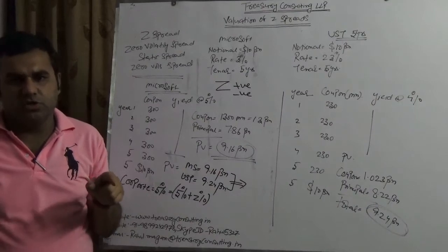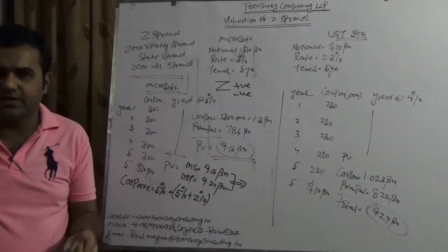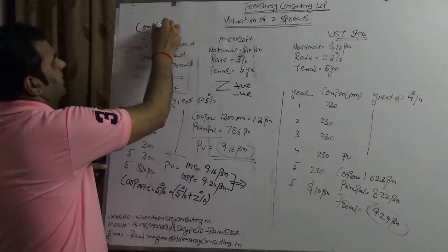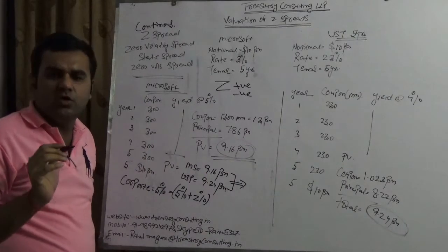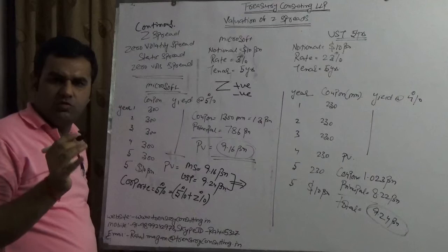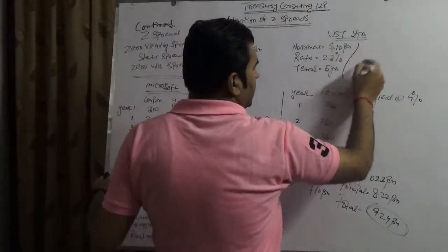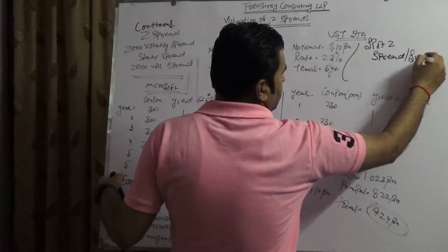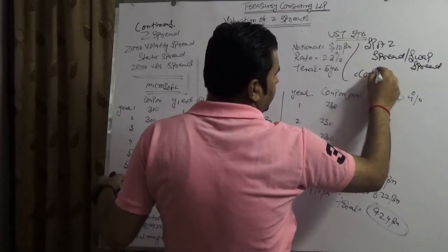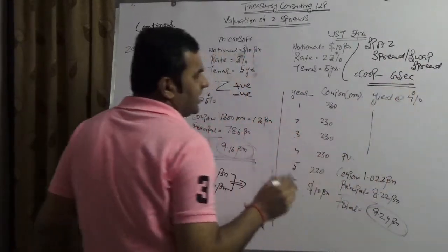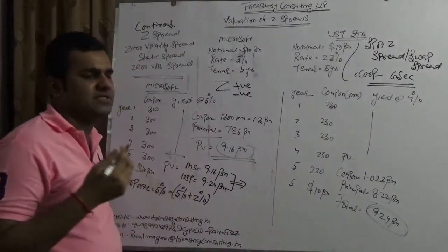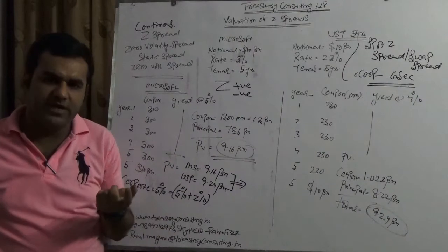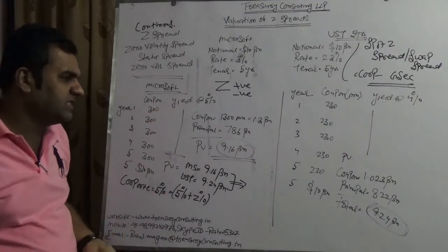With this, the present value of the bond should equal the present value of a particular government bond. However, there is a contention. Many people calculate an instantaneous or spot Z spread. At spot, Z spread would act like a swap spread — it is nothing but the difference between the corporate bond and the GSEC. It is not always appropriate to calculate the swap spread at a particular point in time; rather, we should calculate the Z spread on a continuous basis, because this is the right approach.